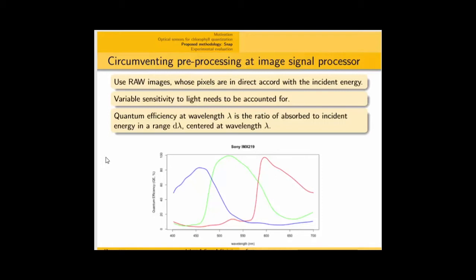A main problem that occurs with raw images, however, is the variable sensitivity of photodiodes to light. One needs to model this sensitivity. This can be modeled using a parameter named quantum efficiency, which can be described as the ratio of absorbed to incident energy in a range d lambda centered at a wavelength lambda.